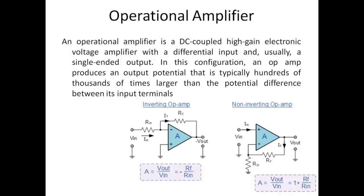The two resistances attached to the op-amp decide the amplification factor. If the input signal is at the negative terminal — called the inverting configuration — the amplification factor is −Rf / Rin, meaning a phase reversal takes place. The output will be sinusoidal with magnitude amplified by factor A but inverted in phase.